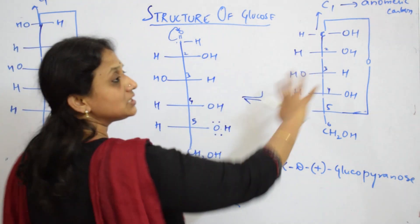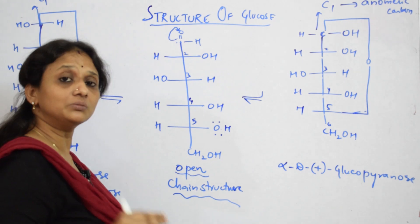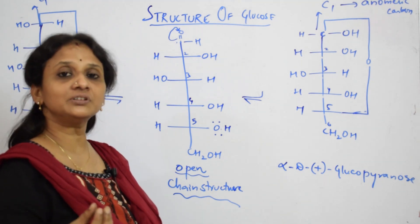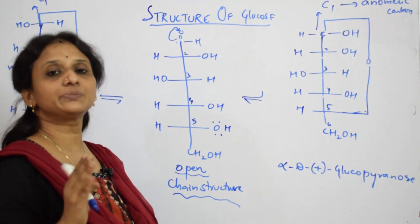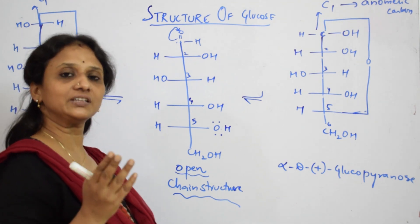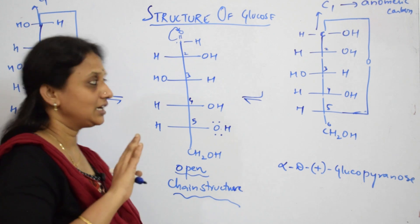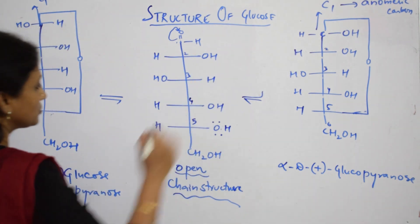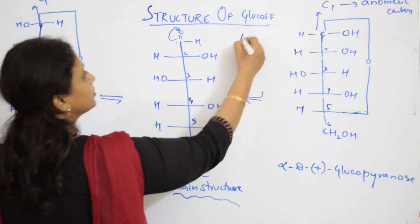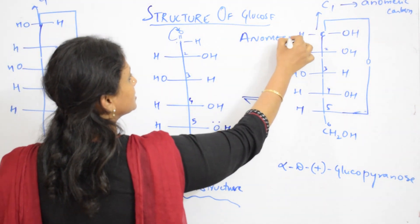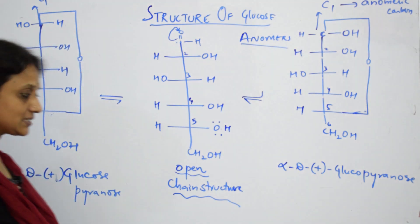These two structures — alpha and beta — are called anomers. Anomers are those structures which differ in the configuration at the C1 position. H on one side and OH on the other side is the only difference, and those two structures showing a variation at C1 are called anomers.